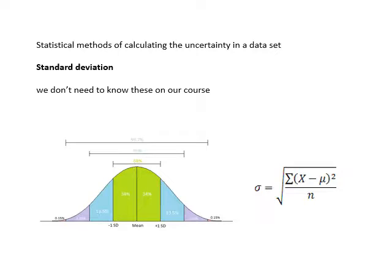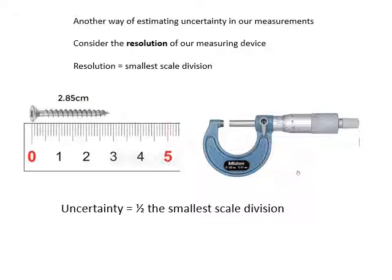There's another way of estimating uncertainty - that's to look at the resolution of your measuring device. The resolution is the smallest scale division. Looking at this ruler, the smallest scale division is a millimeter, so we say the resolution is a millimeter. You can say, being generous, that the uncertainty is a millimeter, or sometimes we say it's half the smallest scale division. You can estimate the uncertainty by looking at the resolution of the measuring device.